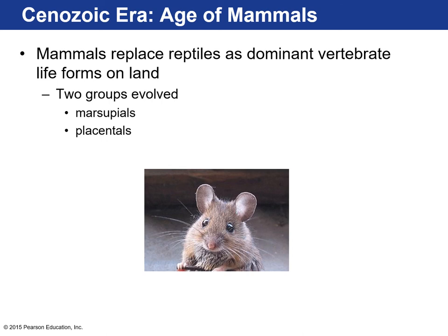Two major groups evolved in the Cenozoic: marsupials and placentals. Marsupials are like koalas, kangaroos, and opossums — when they give birth, their young are very immature and develop with the mother; kangaroos have a pouch. We're considered placentals — we're born within the placenta. There's a third group of mammals that lays eggs — monotremes — the platypus is an example. And that's us — we became the dominant vertebrate species on land.